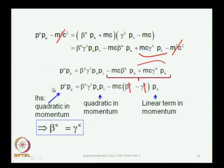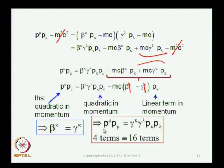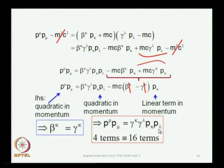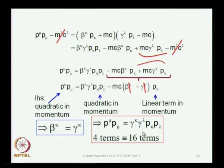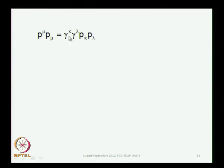Now that we know beta must equal gamma, we substitute that into our expression. The left-hand side, which is the scalar p_mu p_mu, equals beta_kappa (which is the same as gamma_kappa) summed over kappa, times gamma_lambda p_lambda summed over lambda. Each index takes four values, giving 16 terms on the right-hand side, which must give you the four terms on the left. This puts additional requirements on the right-hand side, which will tell us what gamma must be. We have already found that beta equals gamma; now we must find what this unknown gamma actually is.